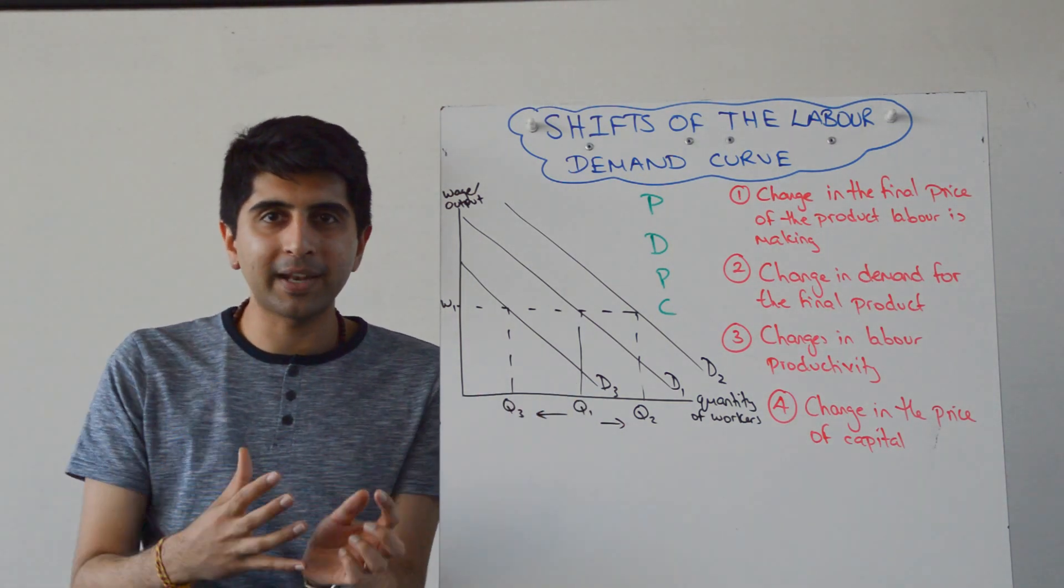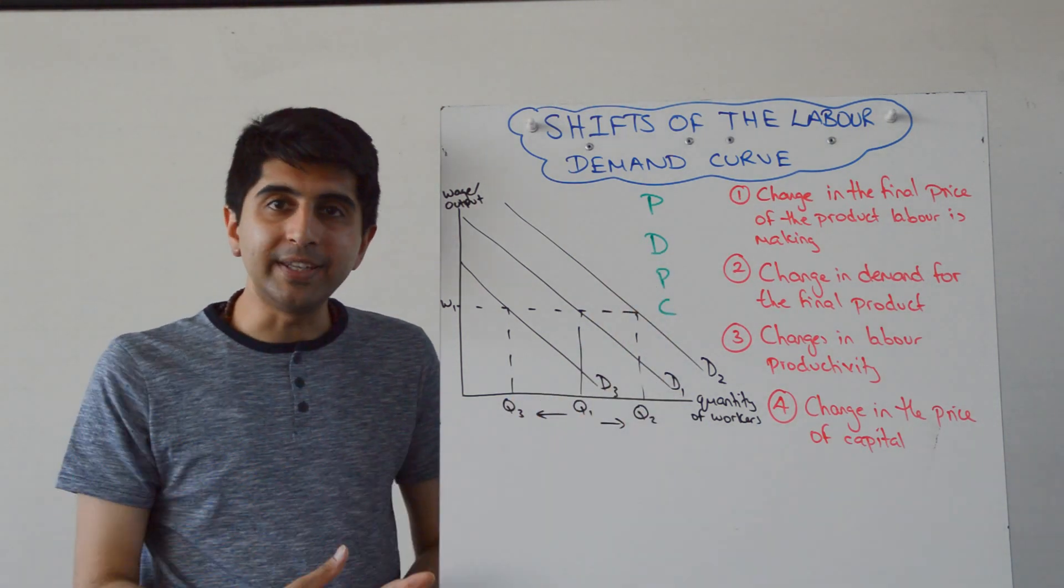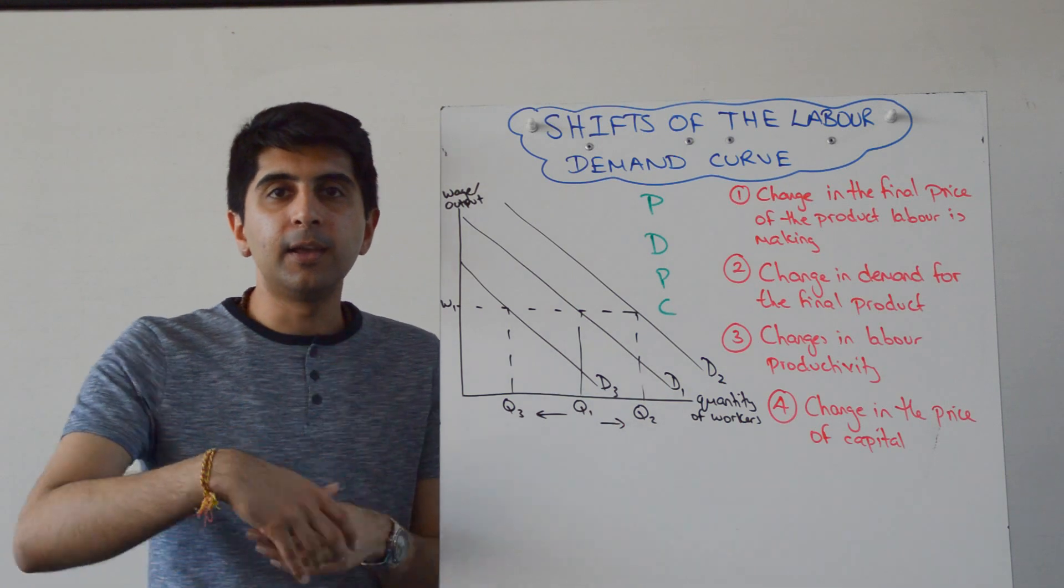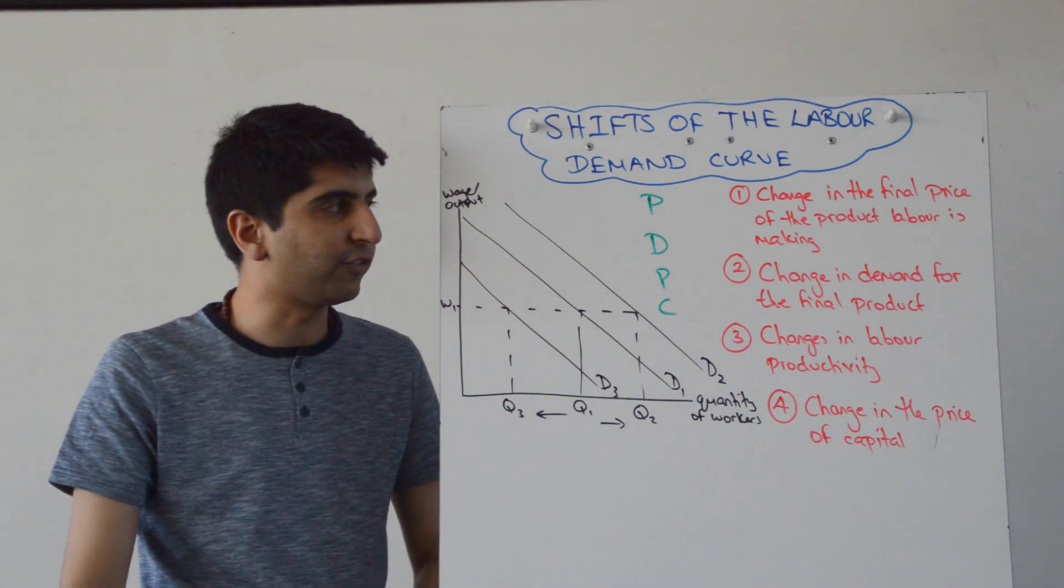And in your head you're thinking, if I can bring this back to MRP and explain how these factors can either increase MRP or decrease MRP, then I can show the examiner that I understand why the labour demand curve will shift left or right.